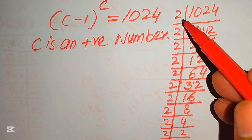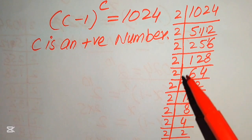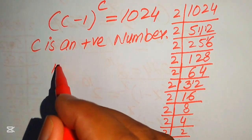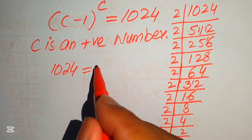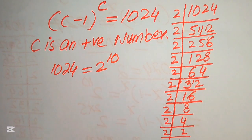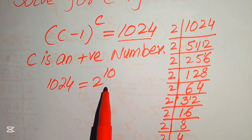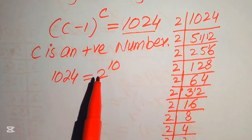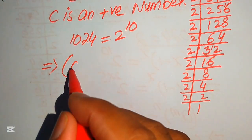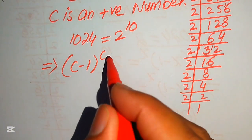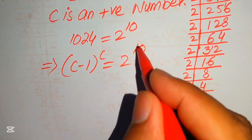Counting the divisions, we see: 1, 2, 3, 4, 5, 6, 7, 8, 9, and 10. So it means that 1024 equals 2 to the power of 10. Now we need to replace 1024 with 2 to the power of 10, so our equation is written as c minus 1 to the power of c equals 2 to the power of 10.